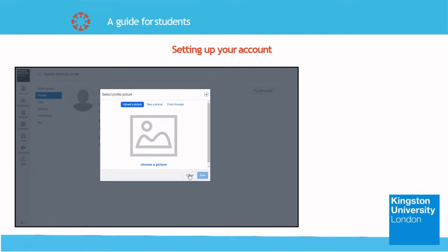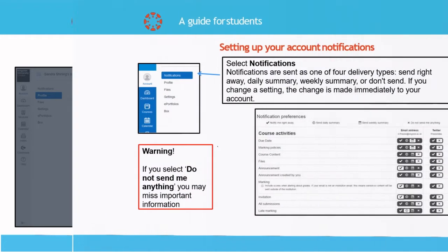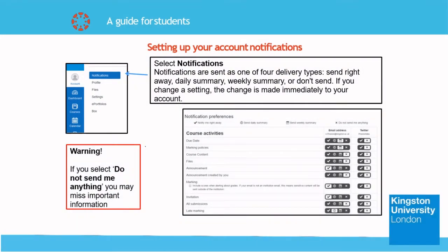Going back to the account settings, you will now set up the notifications for your Canvas account and choose what you want to receive immediately, daily, weekly, or not at all. It is recommended that you do not select the do not send me anything function, as you may miss important information when you do not receive any notifications.